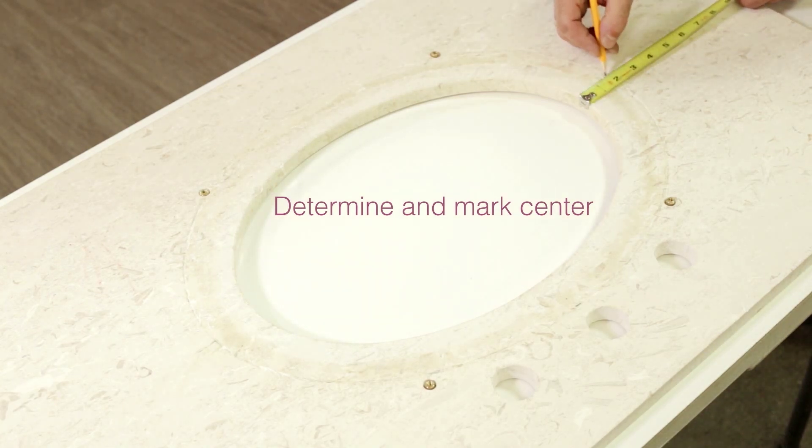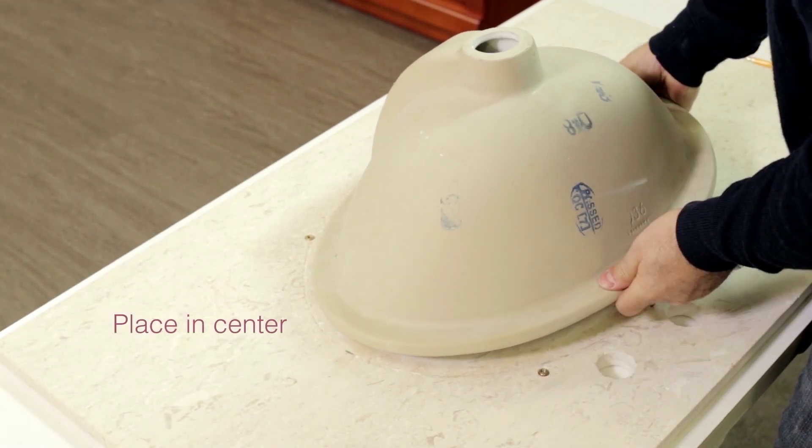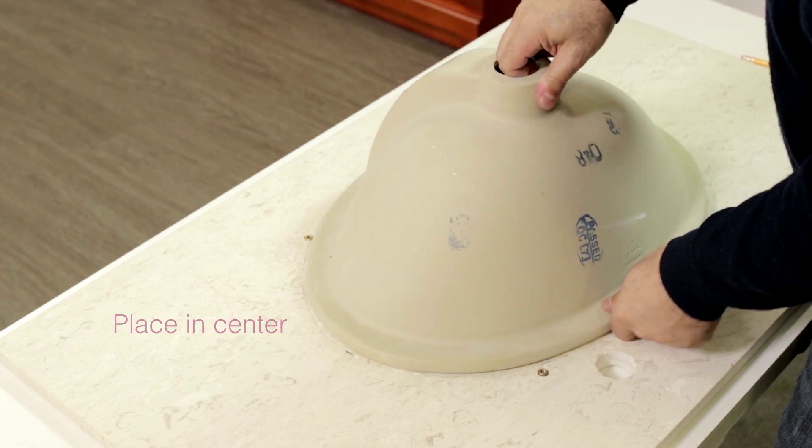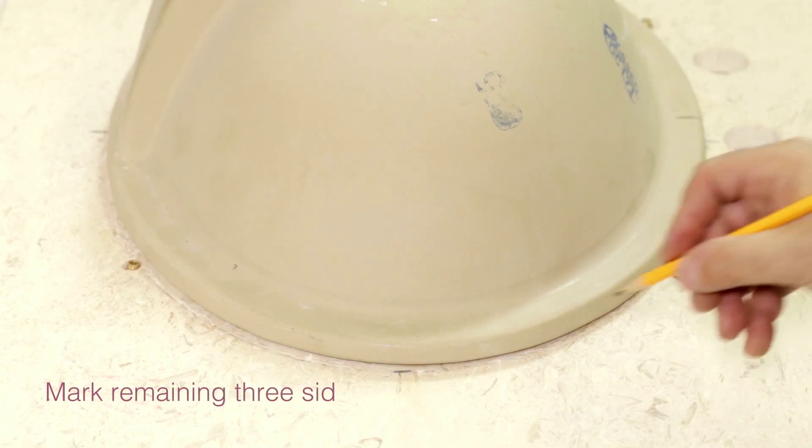Now gently line up both marks until the sink is centered. Mark the sink and top on the remaining three sides and remove the sink from the countertop.